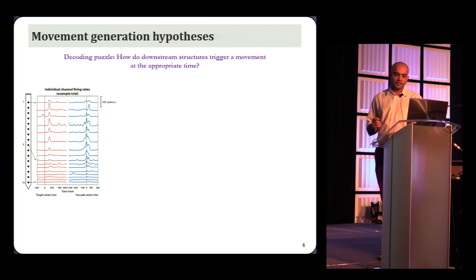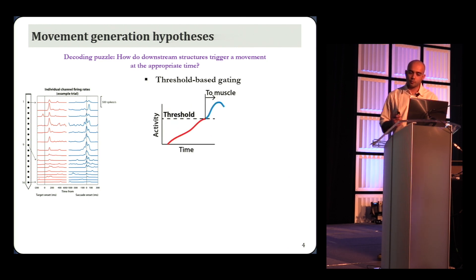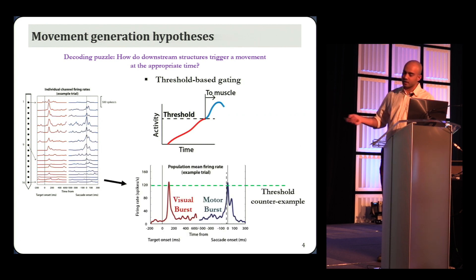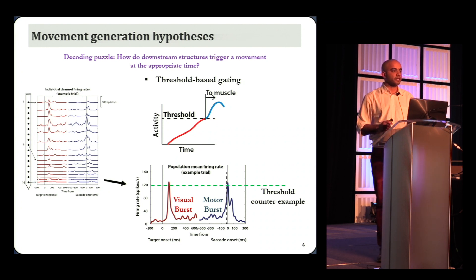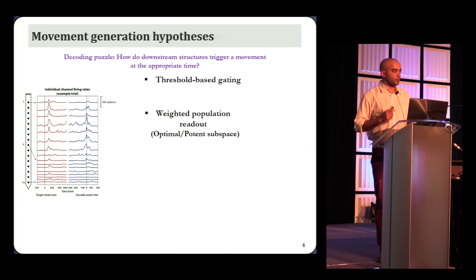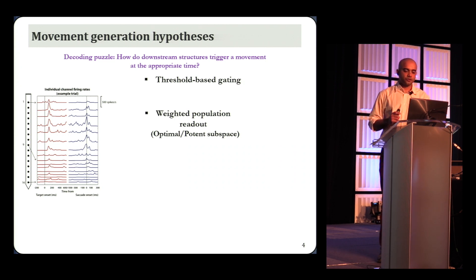A simple explanation is that the activity needs to cross a threshold either at the single neuron or population level in order to produce a movement. This idea may be familiar to many of you from the decision-making literature, but you can reject that right away because I can show you counter examples like this trial where even the population average across all these neurons, the visual burst is higher than the activity during the movement. So any line you draw here will be crossed by the visual burst. There are other models that broadly fall under the umbrella of weighted population readouts. In the motor cortex, for example, it's been shown that you need activity to go into this optimal or potent subspace in order to produce a movement. But both of these are static readouts with little information about time incorporated.